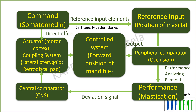The CNS has by default learned the ideal teeth relation and compares the present disturbed relation to the original one, then passes a signal to the motor cortex, which further activates the lateral pterygoid muscle and retrodiscal pad in order to position the mandible forward by growth at the condyle, thereby establishing a cusp-to-fossa or ideal teeth relationship.